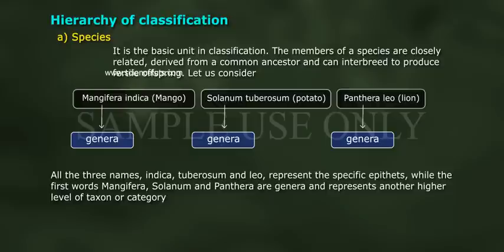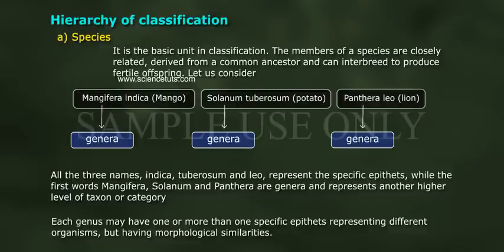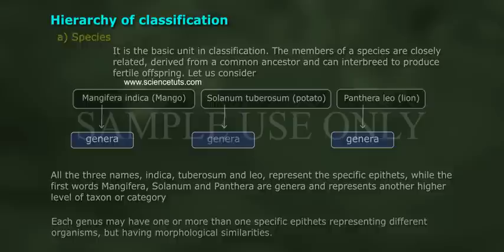The first words Mangifera, Solanum and Panthera are genera and represent a higher level of taxon or category. Each genus may have one or more than one specific epithets, representing different organisms but having morphological similarities.